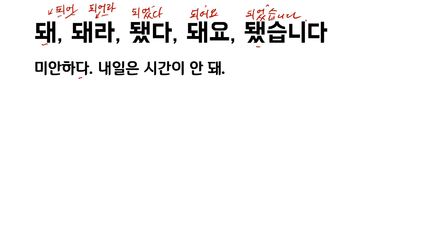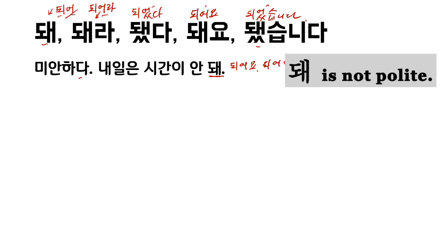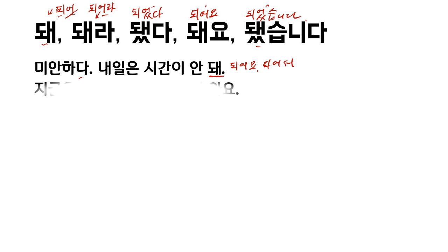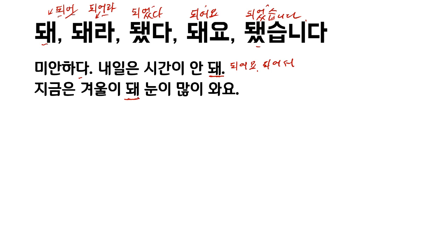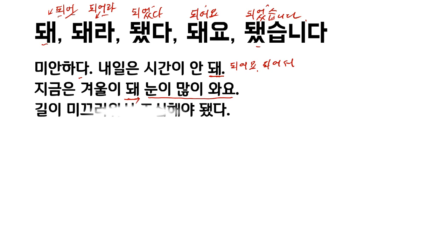미안하다. I am sorry. 내일은 시간이 안 돼. This is 안 되어. 안 되어요 — this is not polite style. I am not available tomorrow. 지금은 겨울이 되어, now it is winter. 눈이 많이 와요 — the snow comes a lot. 길이 미끄러웠어, the road is slippery. 조심해야 됐다 — 야 됐다, so this is 되었다. Because the road was slippery, I had to be careful.